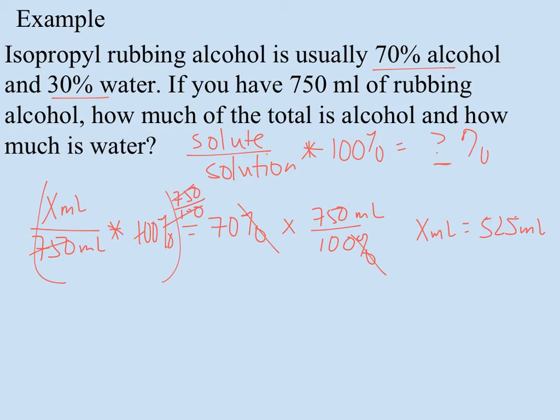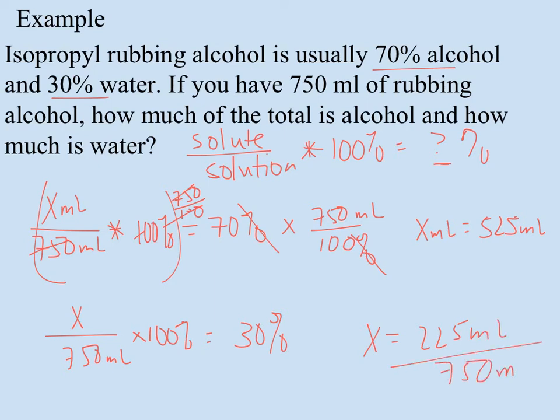As far as how much is water I can set the same problem up with my 750 milliliters on the bottom times 100 percent and now this is going to be equal to 30 percent. And so now when I take 30 percent times 750 over 100, this time I'm going to come up with x equal to 225 milliliters. And you notice these two add up to the total of 750. So if I've been confident on my first answer, I could have just taken the 525 and subtracted from 750 and the difference should be my water.